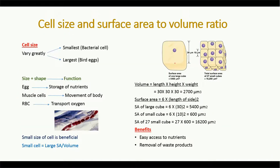Here we have one large cube and 27 small cubes. The large cube has a side length of 30 micrometers, while each small cube has a side length of 10 micrometers. The volume of both sets is the same — using the formula length × height × width, we get a volume of 2700 cubic micrometers. Surface area for a cube equals 6 × (side length)². For the large cube: 6 × 30² = 5400 square micrometers.